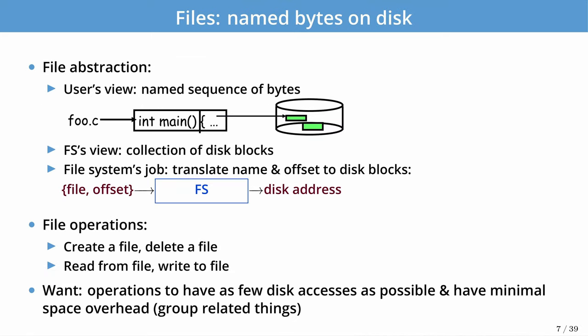Let's build up an understanding of the abstractions the file system provides. The first is the notion of a file. The disk is just a collection of sectors you can read and write to, but when you're writing code you're just making calls to read and write — adding bytes, overwriting bytes, reading sequences. You don't want to think about sectors or where they're placed on disk. Like the hardware MMU, the file system translates file names and offsets into disk addresses and facilitates those read and write operations.